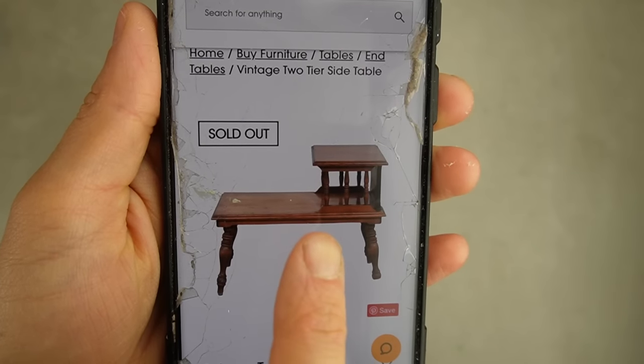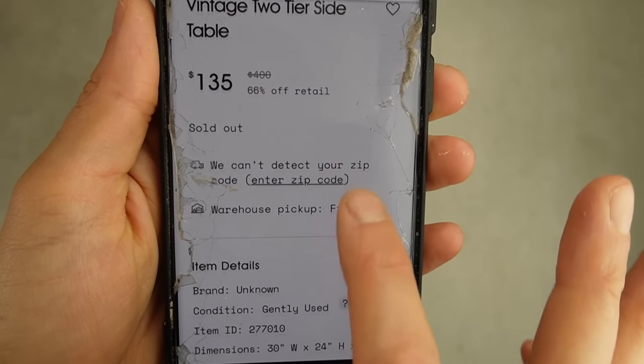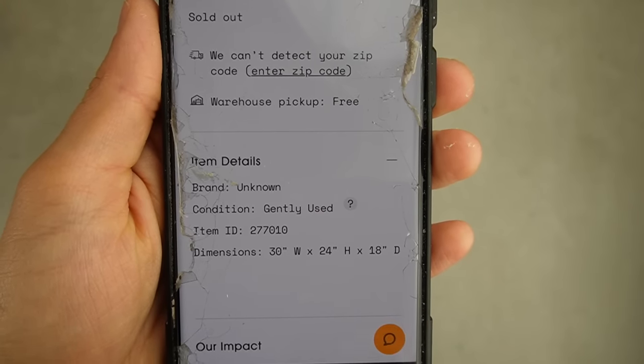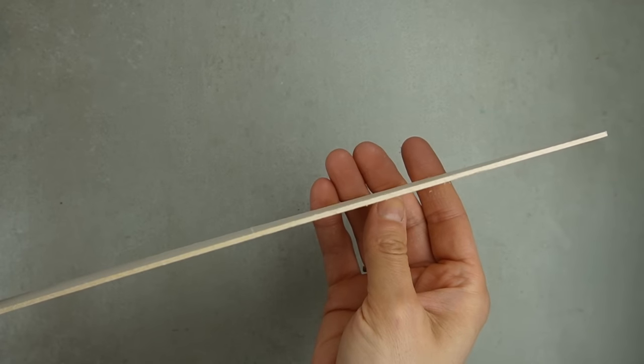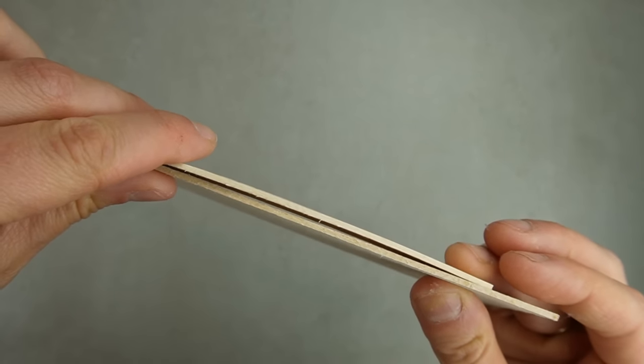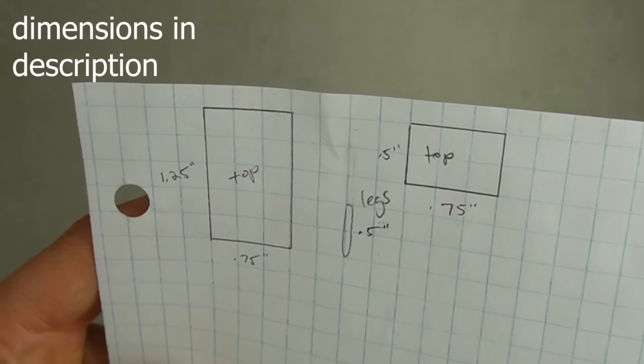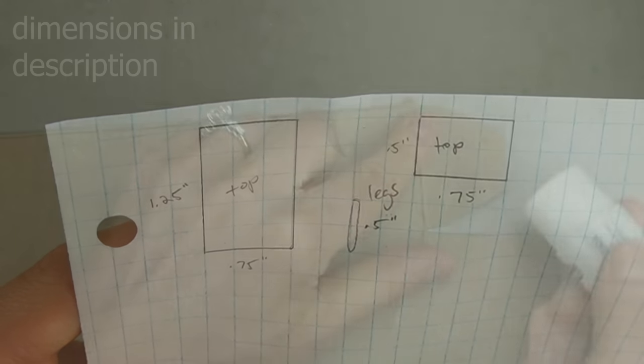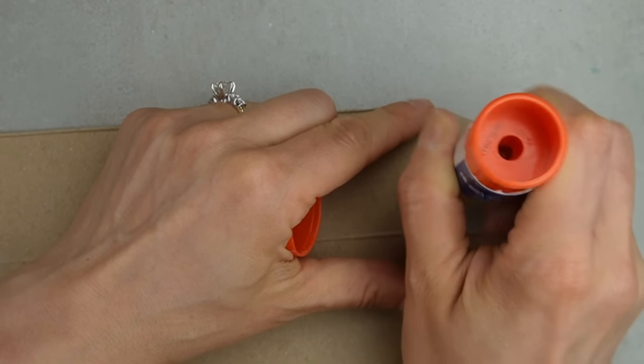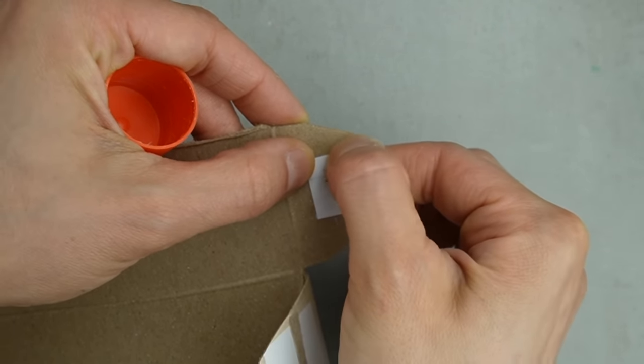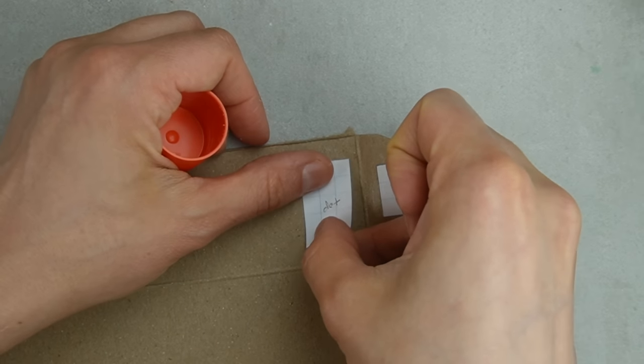I'm getting started by making this retro two-tiered side table. I chose this design because the dimensions are listed. I'm using 1/8 inch thick basswood but you could also use popsicle sticks. I made a 1:24 scale pattern on graph paper and glued it to cereal box. 1:24 scale is half the size of 1:12 scale, which is why it's also called half scale.